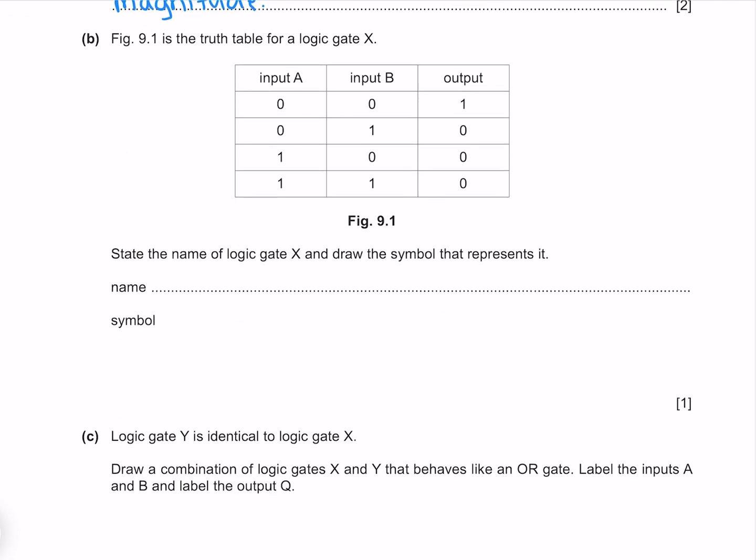Figure 9.1 is the truth table for a logic gate X. State the name of the logic gate X and draw the symbol that represents it. We see that our output is only on when both of our inputs are off. This means that this is a NOR gate whose symbol looks like this.